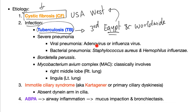Next: severe pneumonia, which could be viral — adenovirus or influenza — or bacterial pneumonia such as Staph or Haemophilus influenzae, or Bordetella pertussis. The vaccine against pertussis will actually decrease the incidence of bronchiectasis.